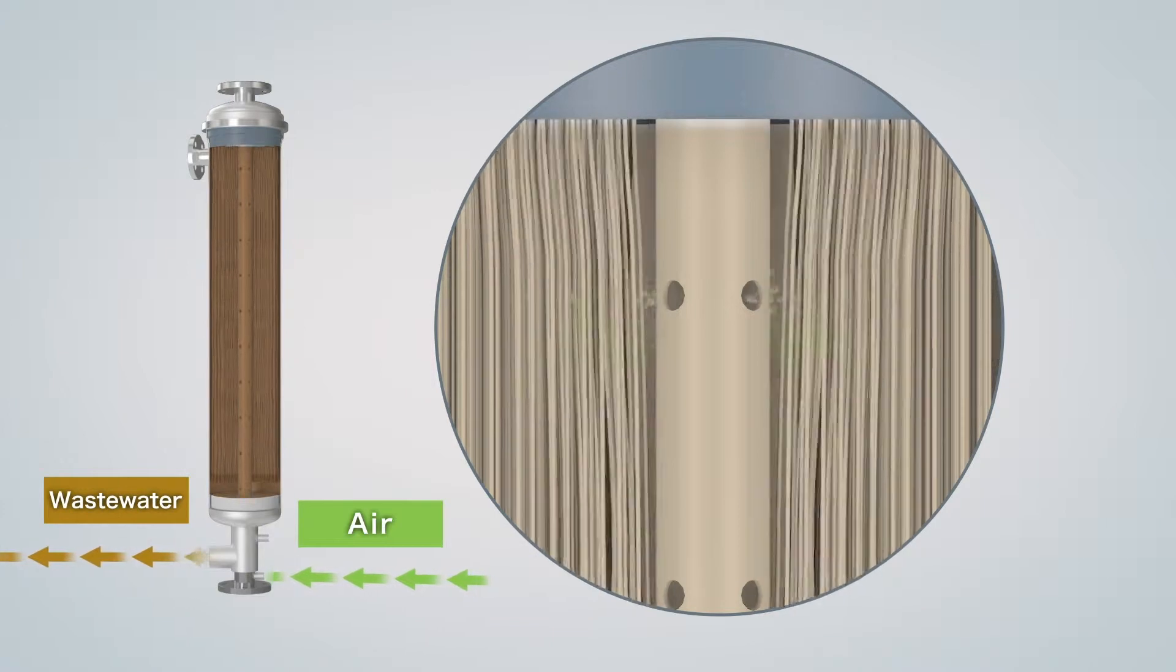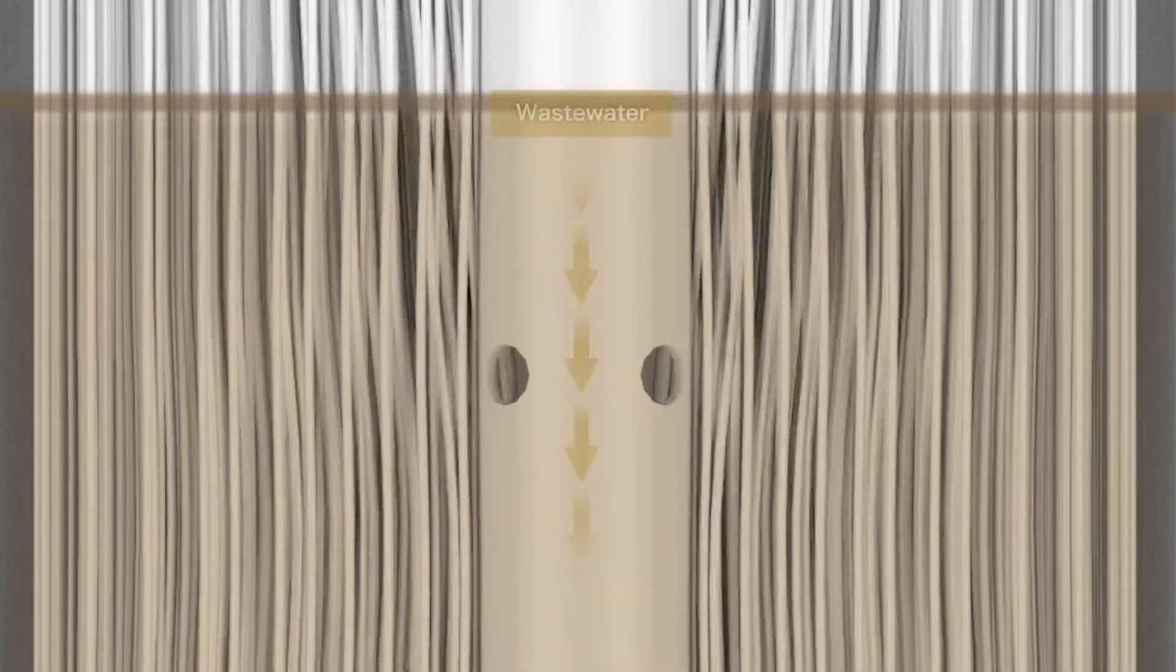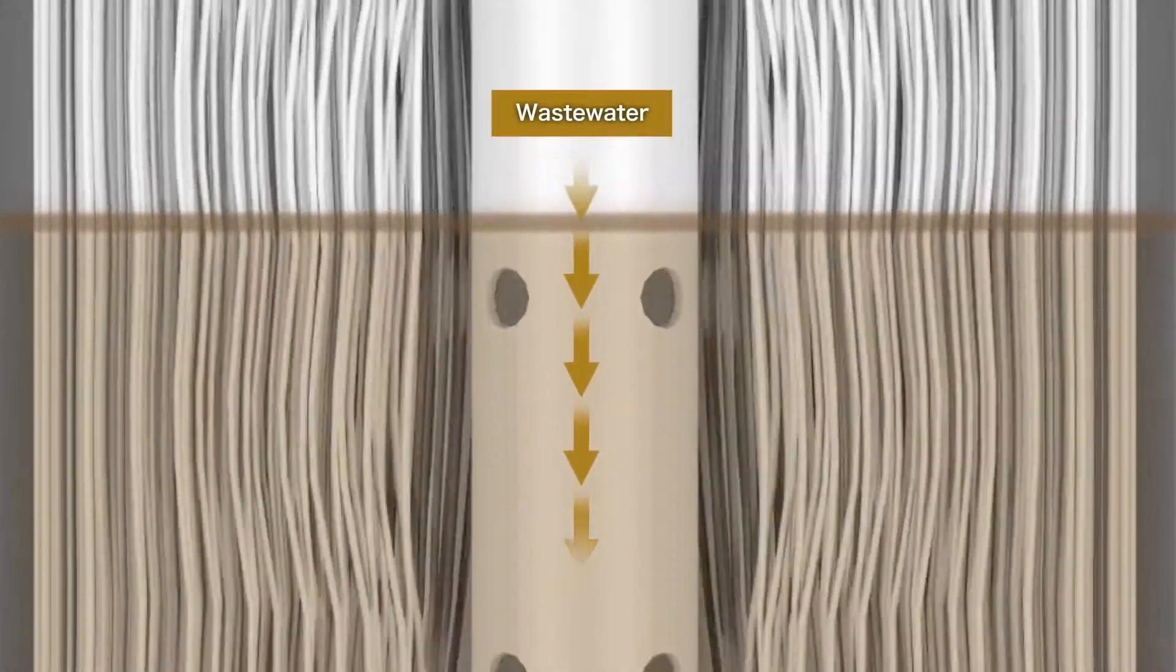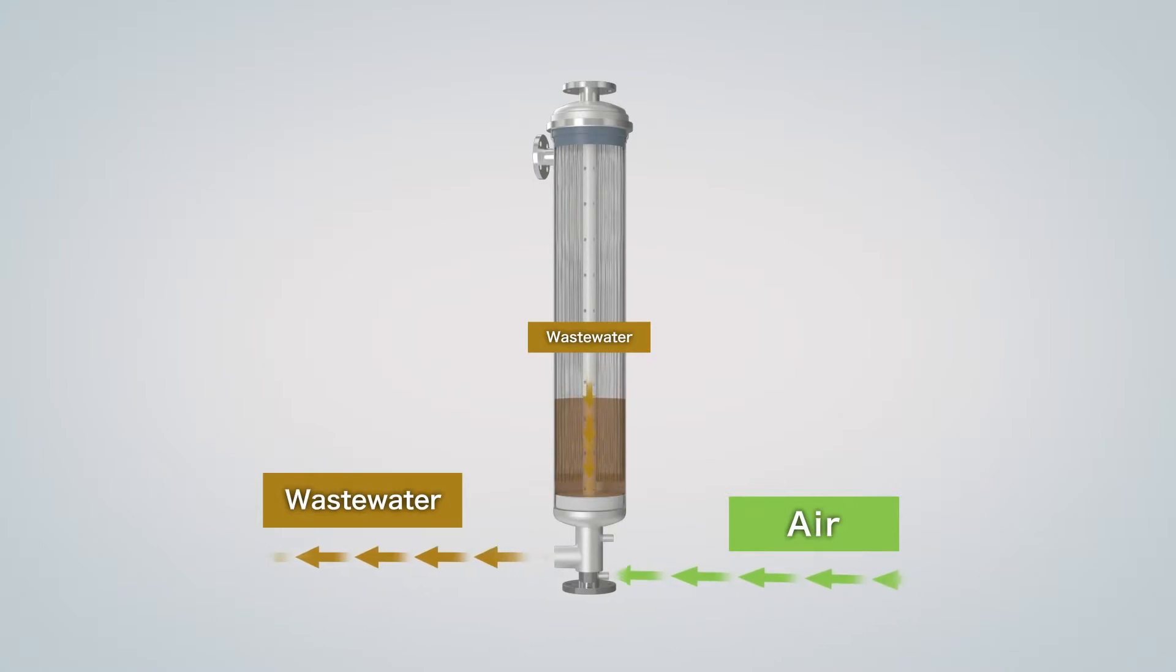The particles removed by physical cleaning are discharged together with the water in the module. When air is fed to the center distributor during water discharge, this results in a shortening of water discharge time and pressure feed of wastewater becomes possible.